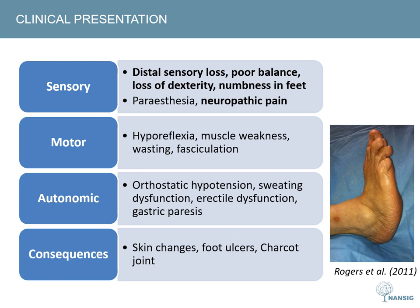Finally, autonomic symptoms. As our autonomic nervous system innervates many different organs, these symptoms can be wide and varied, including orthostatic hypotension, problems with sweating, erectile dysfunction and gastric paresis, leading to feelings of early satiety and bloating.